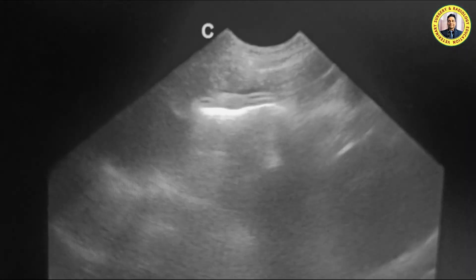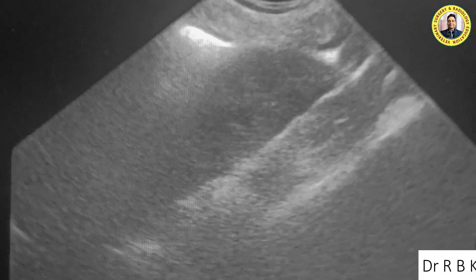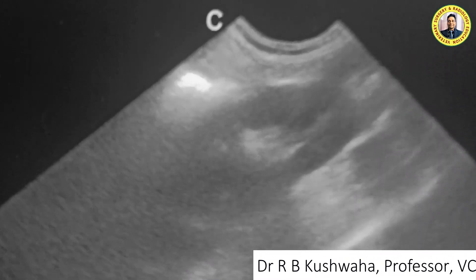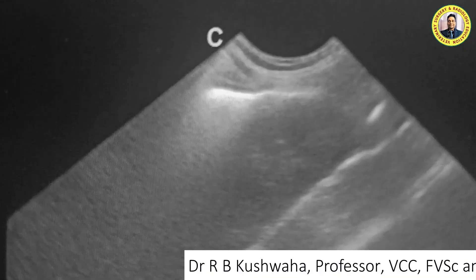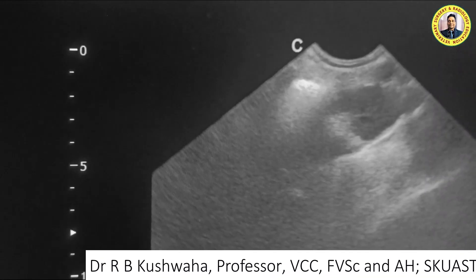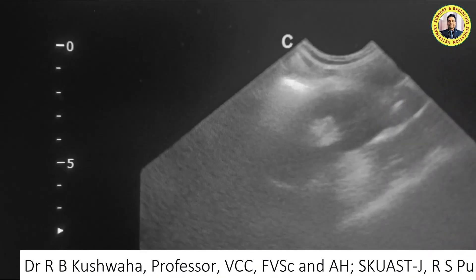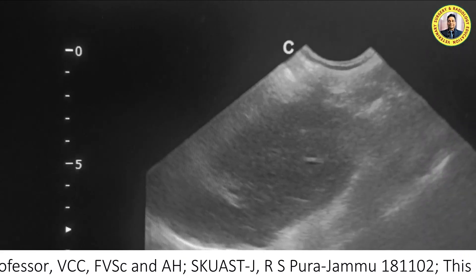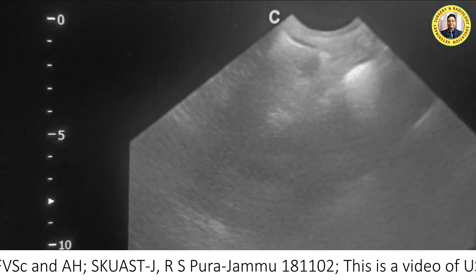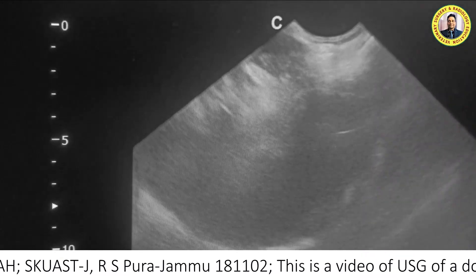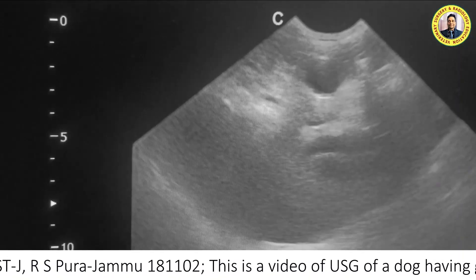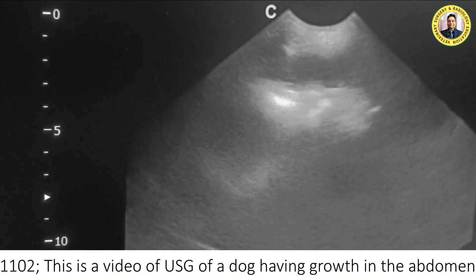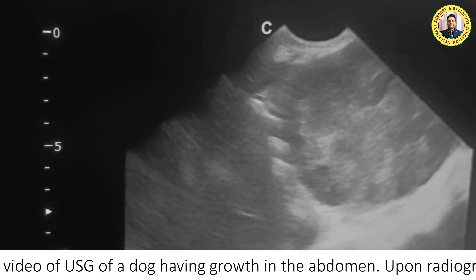If you go down, you can see the right kidney. This one is the right kidney — the picture will be more clear when we scan with the linear transducer. The size of this kidney appears normal. There is a fat pad attached with this kidney. The liver appears to be normal.